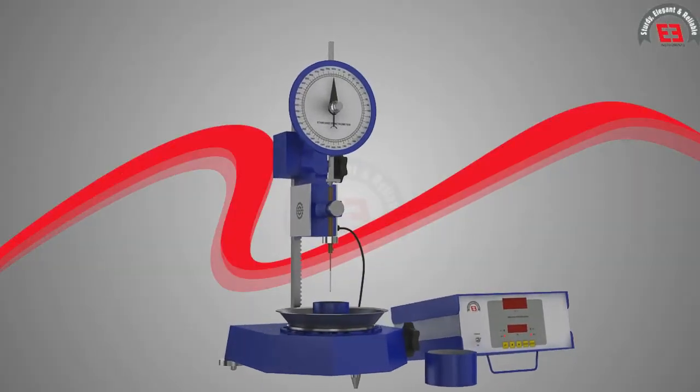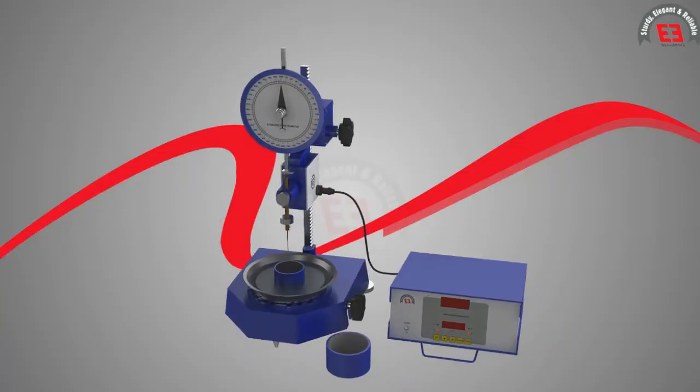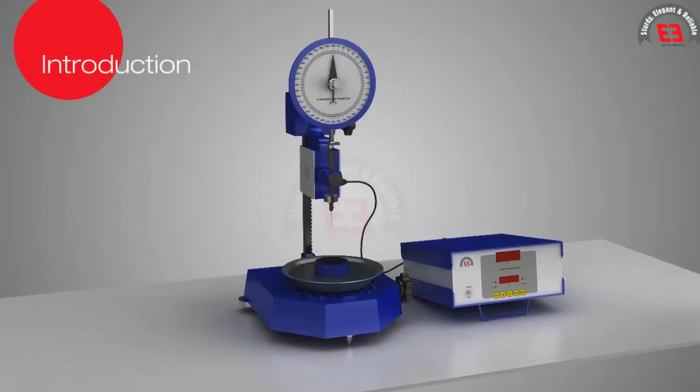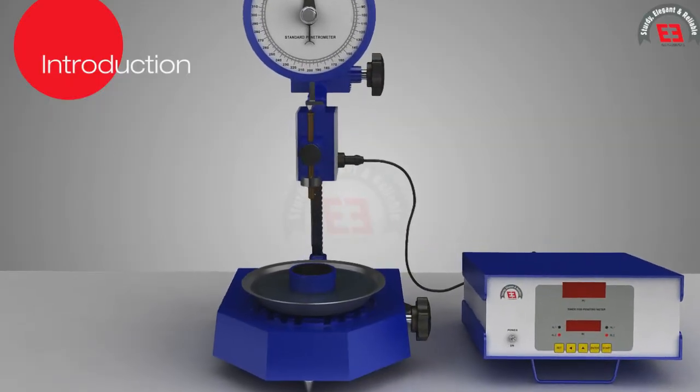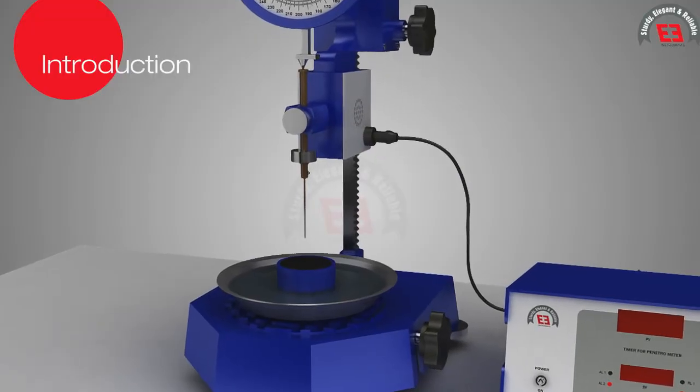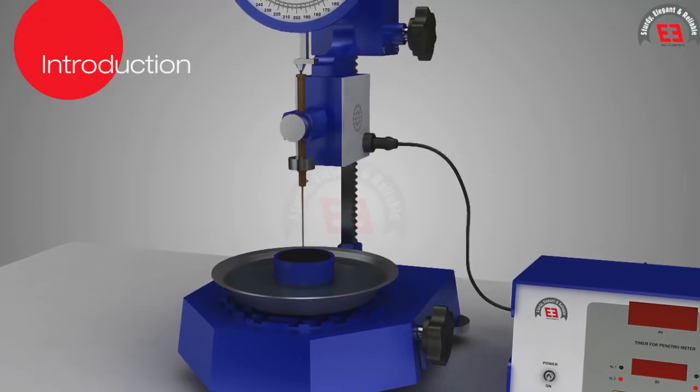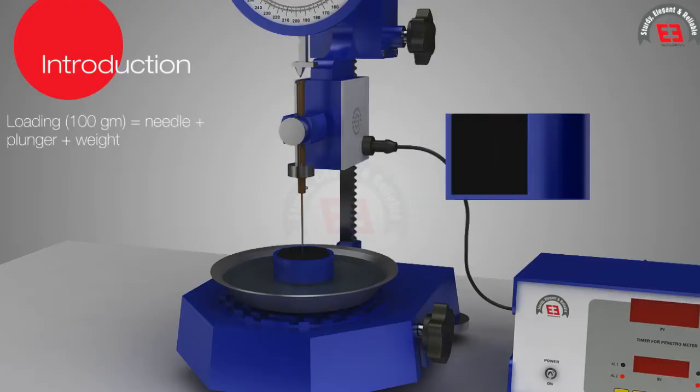Method of Determination of Penetration Value of Bitumen as per IS-1203. To examine the consistency of a sample of bitumen by determining the distance in tenths of a millimeter that a standard needle vertically penetrates in the bitumen specimen under known conditions of loading, that is 100 grams.